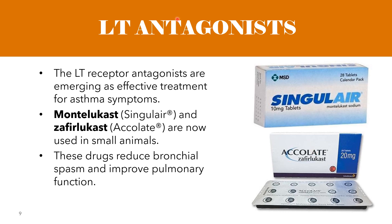According to Plumb's medication guide, montelukast is sometimes used to treat asthma in cats. It has also been tried to decrease the inflammation associated with inflammatory bowel disease and heartworm disease. The FDA approved this drug for use in humans, but it is not officially approved for use in animals. However, the FDA allows veterinarians to prescribe products containing this drug in different species or for other conditions in certain situations.